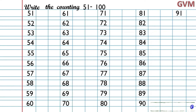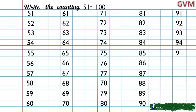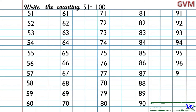91. Now we start with a new row: 92, 93, 94, 95, then 96, 97, 98, 99, 100. This is our counting 51 to 100 complete.